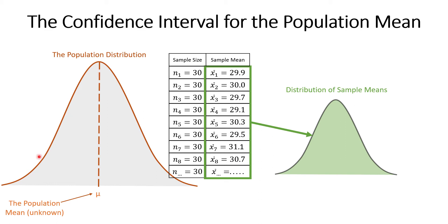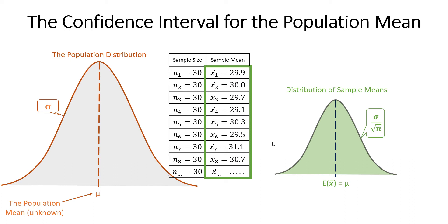In inferential statistics, this is a very important concept called the distribution of sample means. The distribution on the left is a population distribution; on the right is a distribution of sample means — a distribution of these independent sample mean data points. What we know about the distribution of sample means is that the expected value or mean is equal to the population mean. The standard deviation of this distribution is equal to the population standard deviation divided by the square root of n. In this example, n is 30, and the shape of this distribution changes depending on how many samples you choose to take.